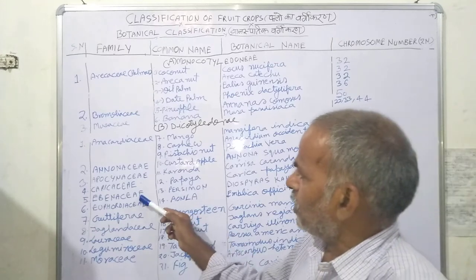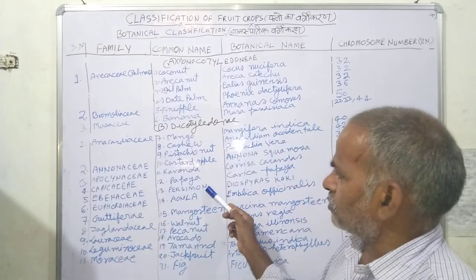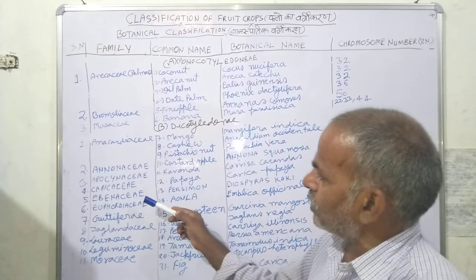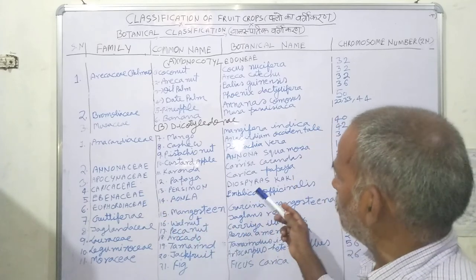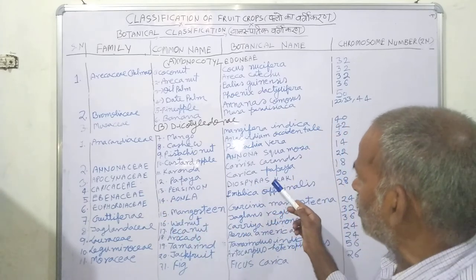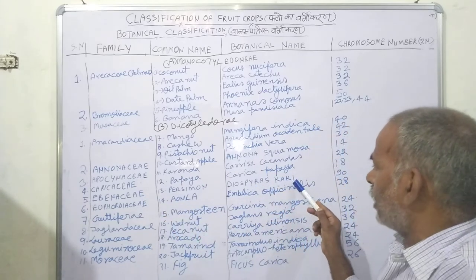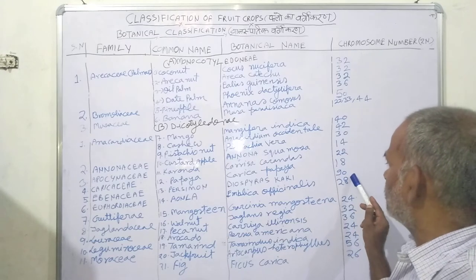Next is the Ebenaceae family. Persimmon belongs to this family, and its botanical name is Diospyros kaki. The chromosome number for persimmon is 90.